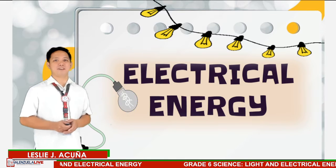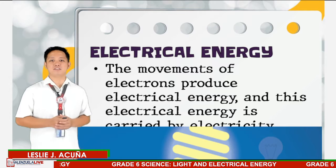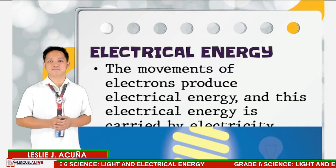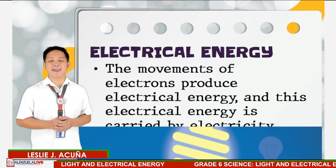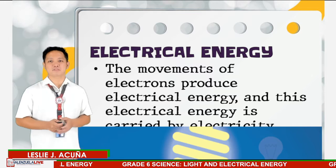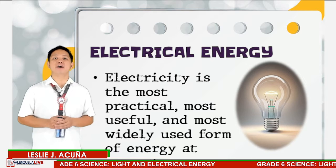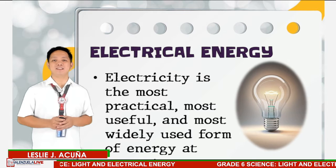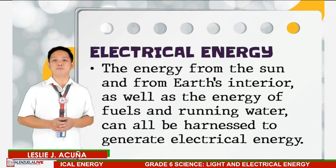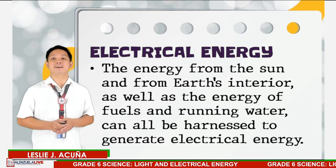Next, we have electrical energy, which is another form of energy. An atom consists of three parts: the proton, neutrons, and electrons. The movement of electrons produces electrical energy, and this electrical energy is carried by electricity. Electricity is the most practical, most useful, and most widely used form of energy at present. Modern man cannot imagine life without electricity. The energy from the sun, Earth's interior, fuels, and running water can also be harnessed to generate electrical energy.